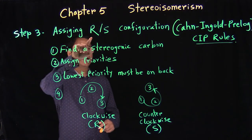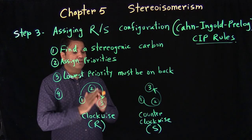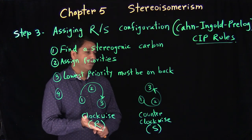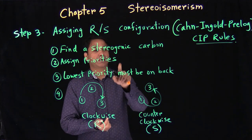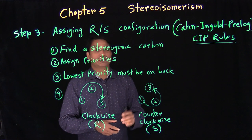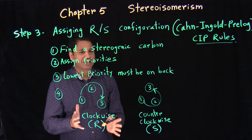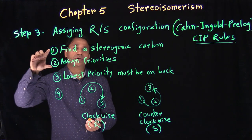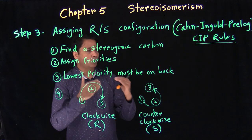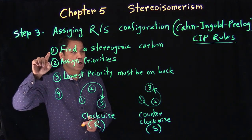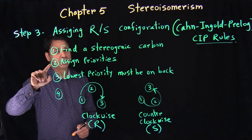Step three is assigning R and S configuration. This is the ultimate goal of everything we did so far. We found a stereogenic carbon, we assigned the priorities — that was step one and step two. This is not a real step; we don't really have to do much for this. We just had to do everything we did so far, one after another.